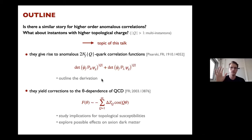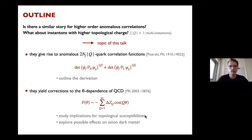I will outline the derivation — it's quite technical. Multi-instantons also yield corrections to the theta dependence of QCD: instead of just a cosine theta, one must consider a sum over all topological charges with a cosine of (topological charge × theta). I will compute this coefficient and explore implications for topological susceptibilities.